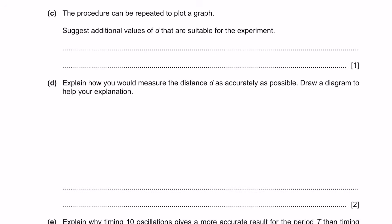Question C. The procedure can be repeated to plot a graph. Suggest additional values of d suitable for this experiment. Initially we have 50 centimeters and 100 centimeters, so any additional value less than 50 or in between 50 and 100 will be acceptable. You should provide at least 3 values.